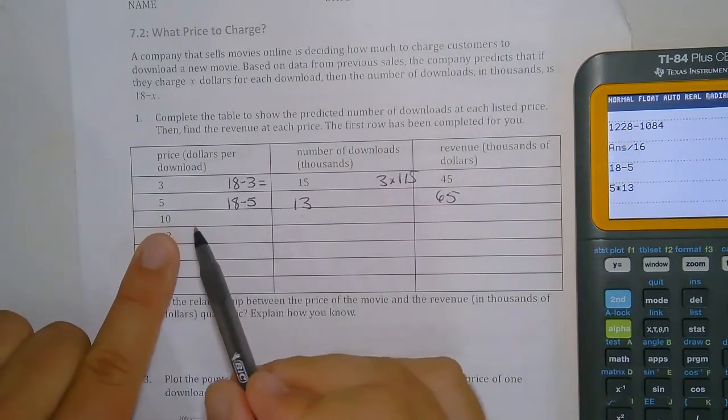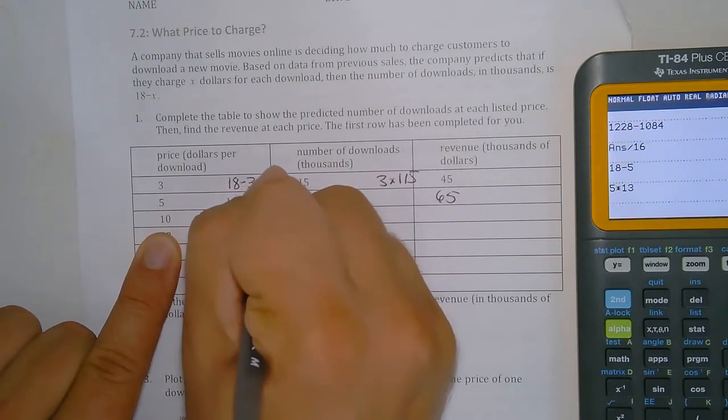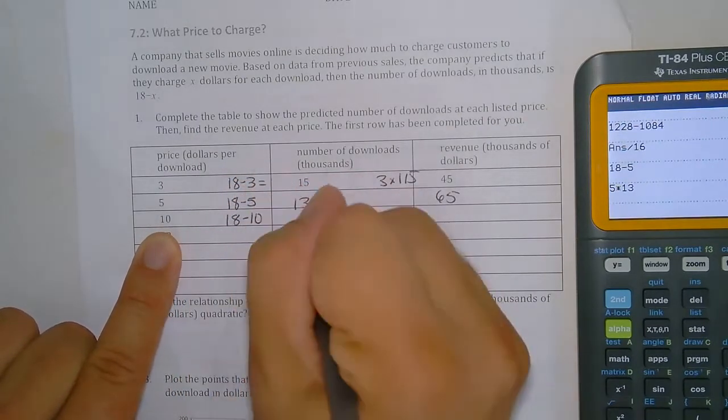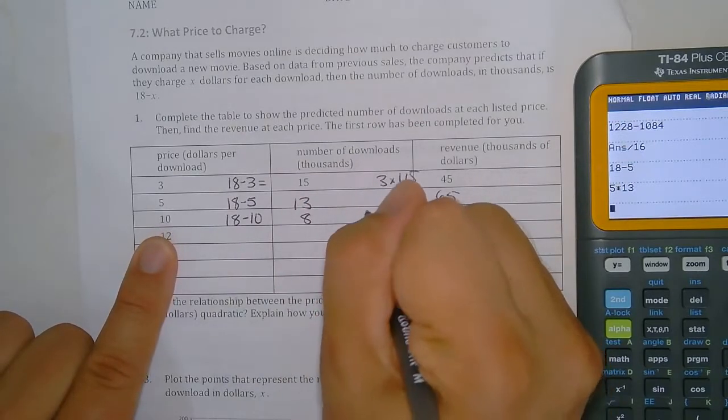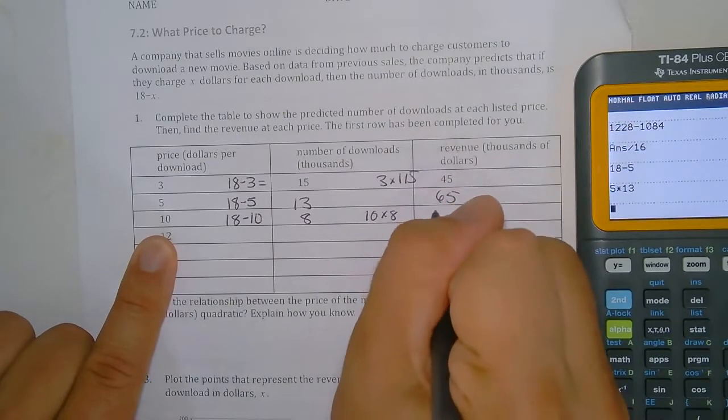And if we charge 10, we do 18 minus 10, which gives us 8. And then here we do 10 times the 8, and 10 times 8 gives us 80.